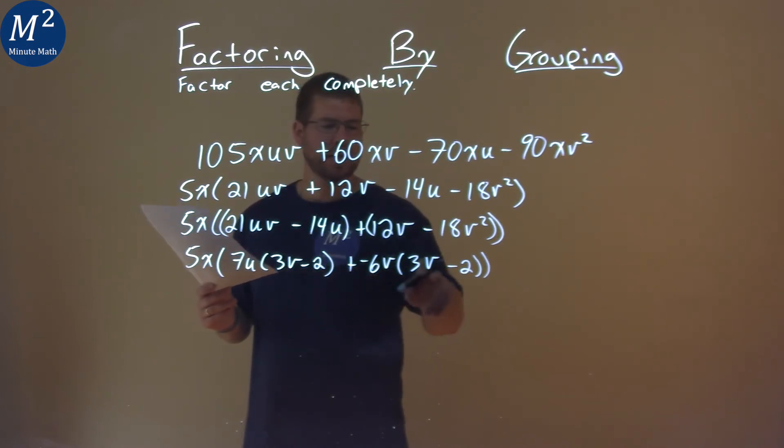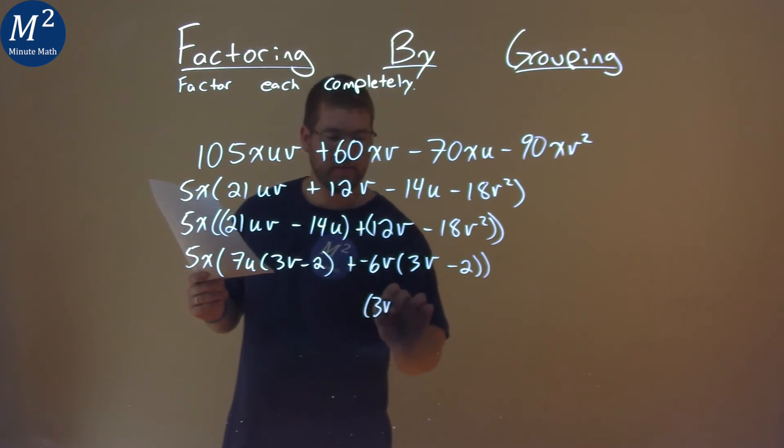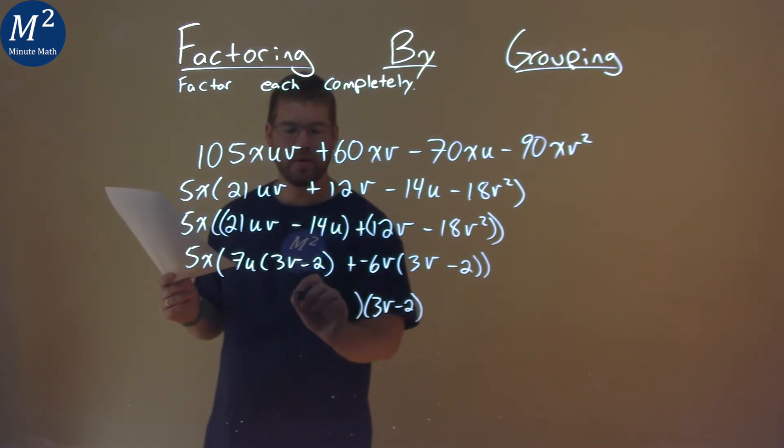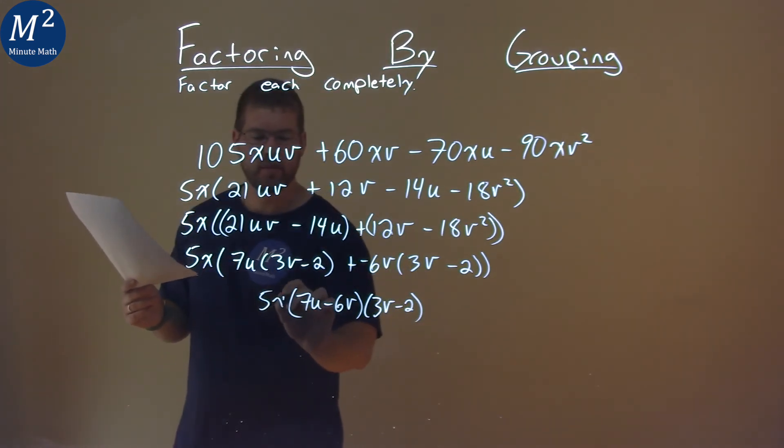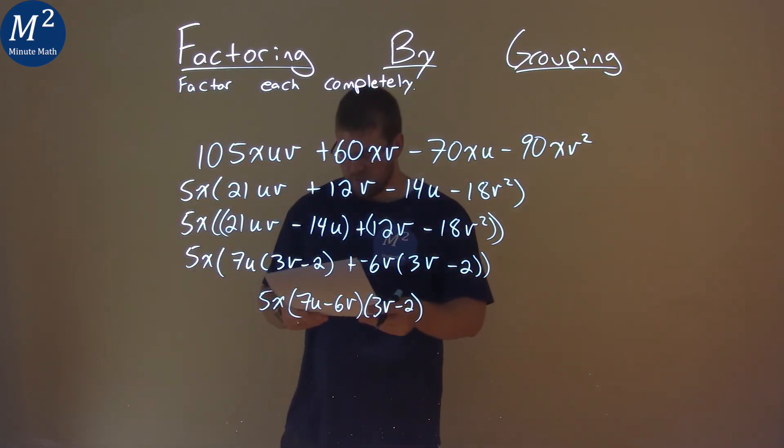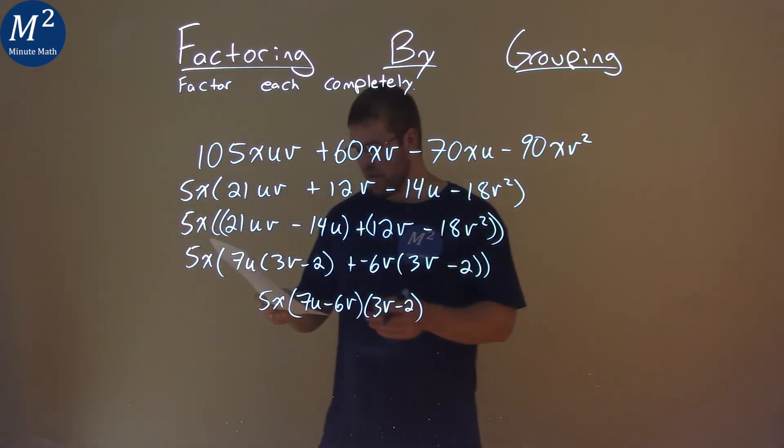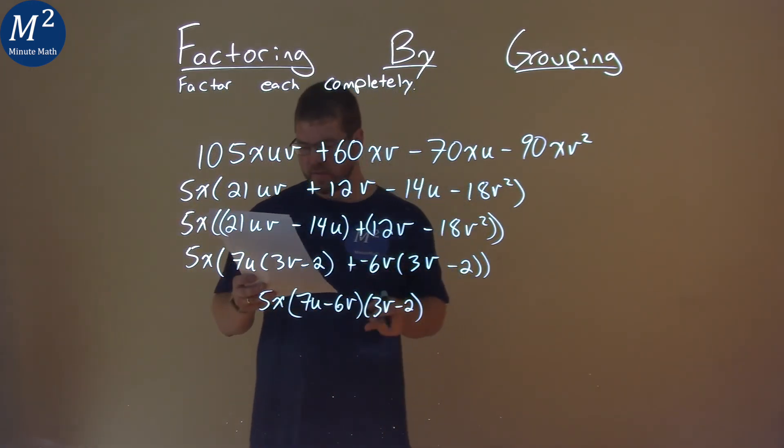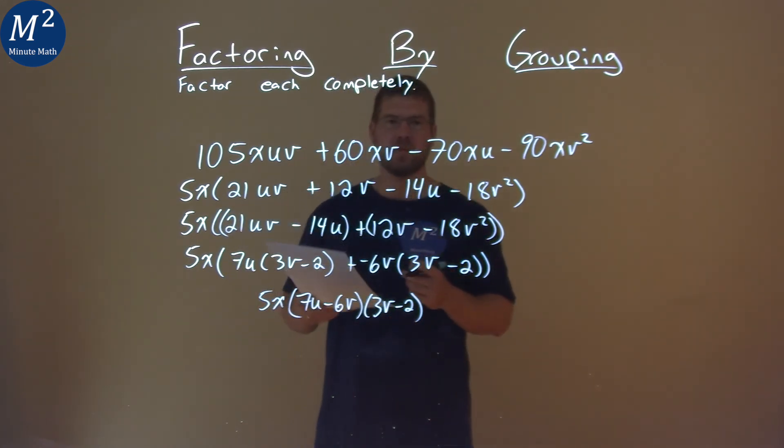Now I have a 3V minus 2 in both parts. Pull that out. I have a 3V minus 2 here, and what am I left over with? Well, the 7U minus the 6V, and the 5X comes down. And so, our final answer here is 5X times 7U minus 6V times 3V minus 2.